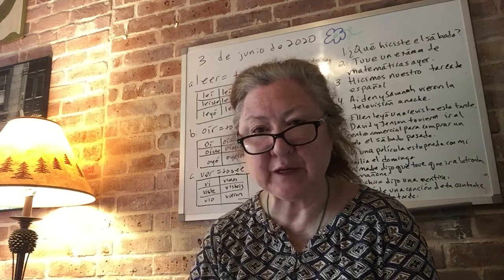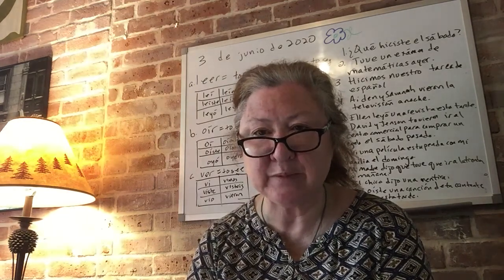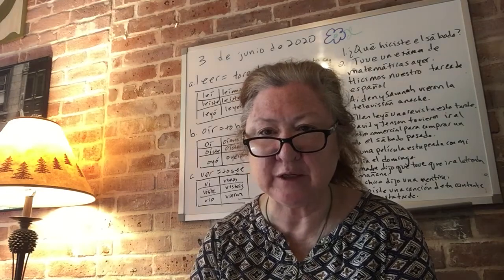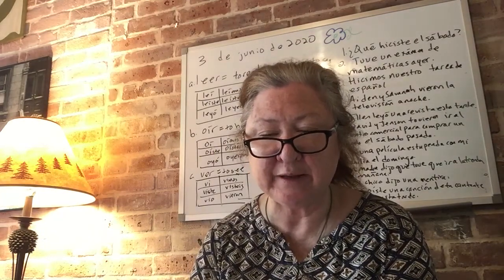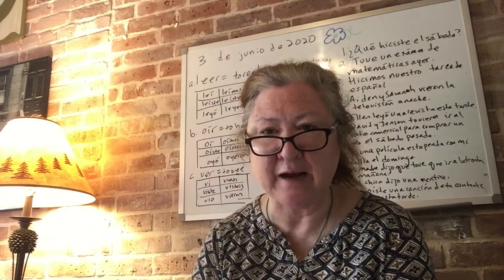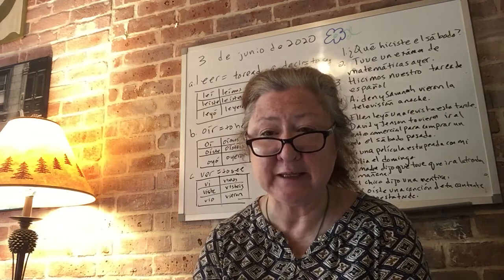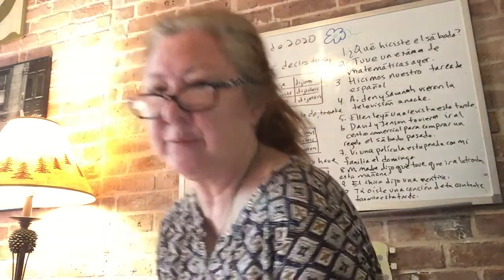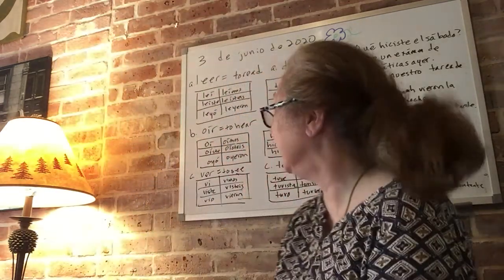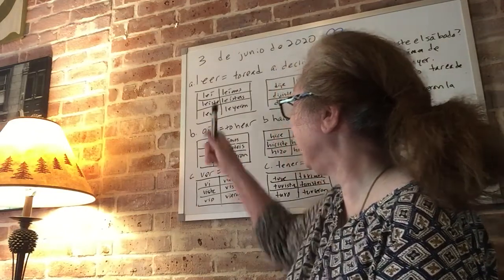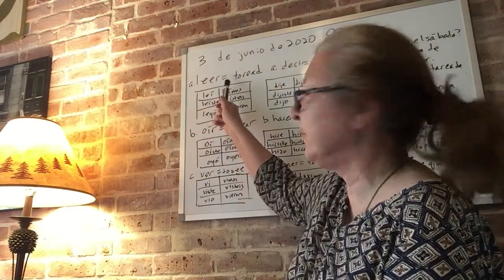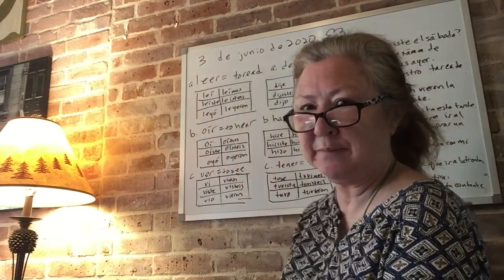We're going to go through the conjugation of these verbs together. I know some of you have had these before, but it'll be a review for you. I think it's important to have these verbs handy — just to know the preterite conjugation. So we have leer, which means to read — write 'to read' in the blank.